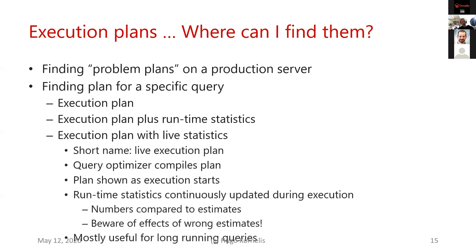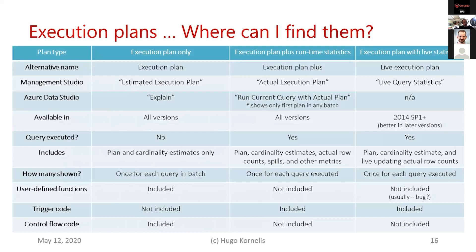The last option — execution plan with live statistics, also known as live execution plan — is the same as execution plan plus runtime statistics except you get snapshots of the runtime statistics sent to your screen while the query is executing. One downside is that you get fewer statistics than with the execution plan plus runtime statistics; the live execution plan includes only a subset. There's a comparison table in the slide deck with all the differences between the three versions.